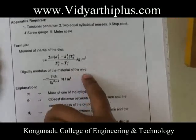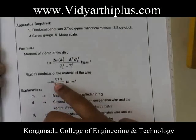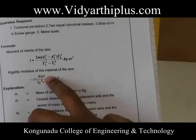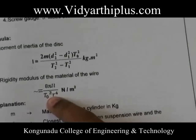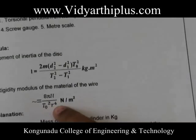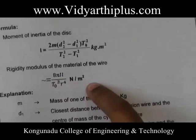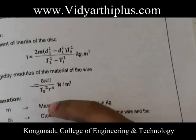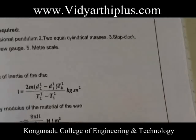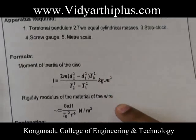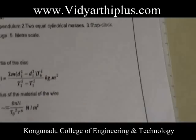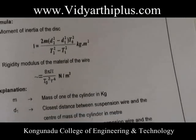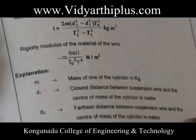The rigidity modulus of the wire N is equal to 2IL divided by T0² × R⁴, in Newton per meter squared. Using this formula, you can calculate the moment of inertia and the rigidity modulus of the wire by torsional oscillations.